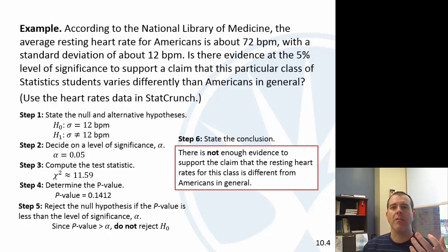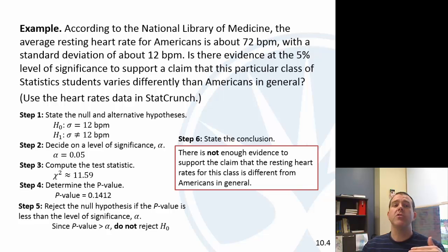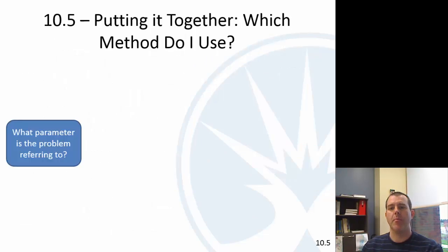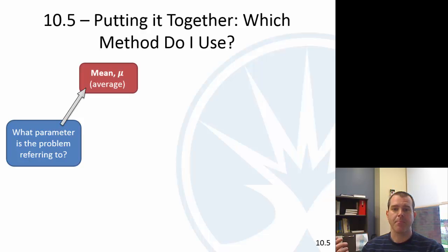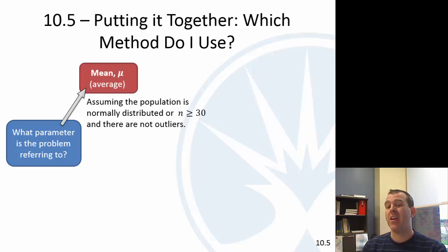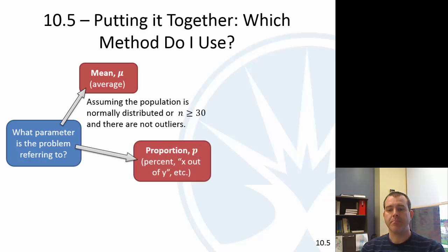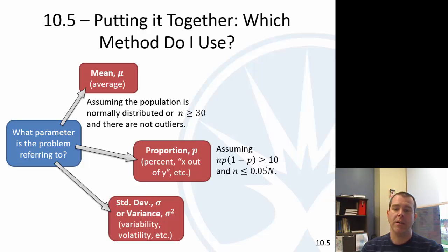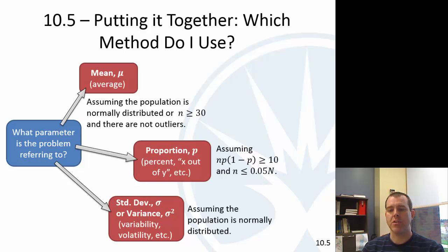Once you get the rhythm of hypothesis testing, it's all about knowing which path to go — just like confidence intervals. Let's do section 10.5, the last section, right here in this video: trying to determine what method to use. Are we looking at a mean, which is an average? You need to be normally distributed or have a sample size of at least 30 with no outliers. Is it a percent or proportion? Then n times p times (1 minus p) must be at least 10, with sample size less than 5% of the population. Or is it a variability — does it vary more, or is it about the standard deviation or variance? That requires the population to be normally distributed.